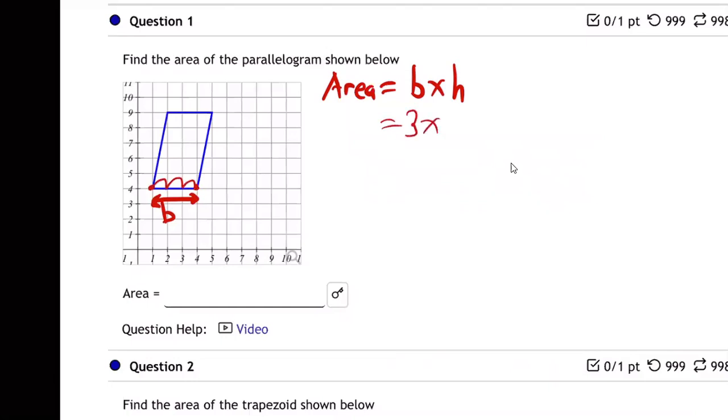Now what's the height? How do we figure out the height? Is the height one, two, three, four, five? Is that right? No, no. Height can't go diagonal. You always have to go straight down to the ground, not diagonal.